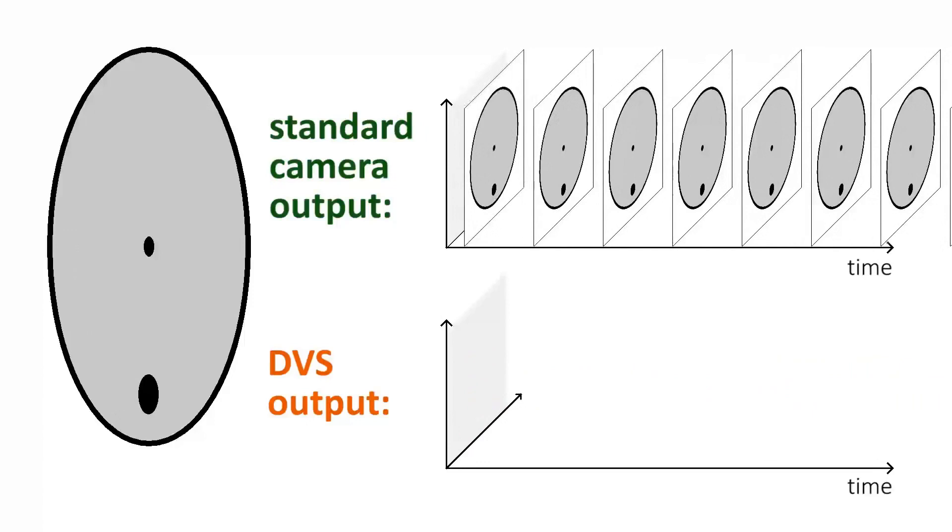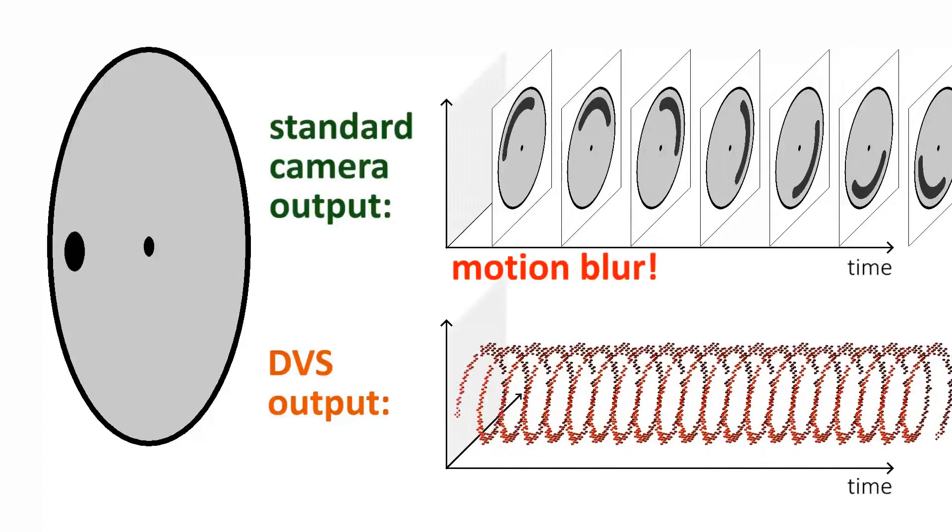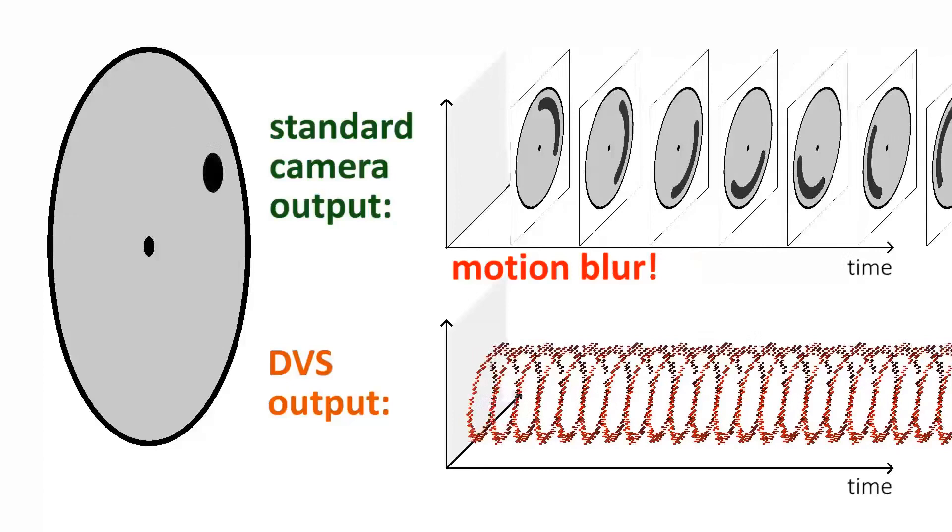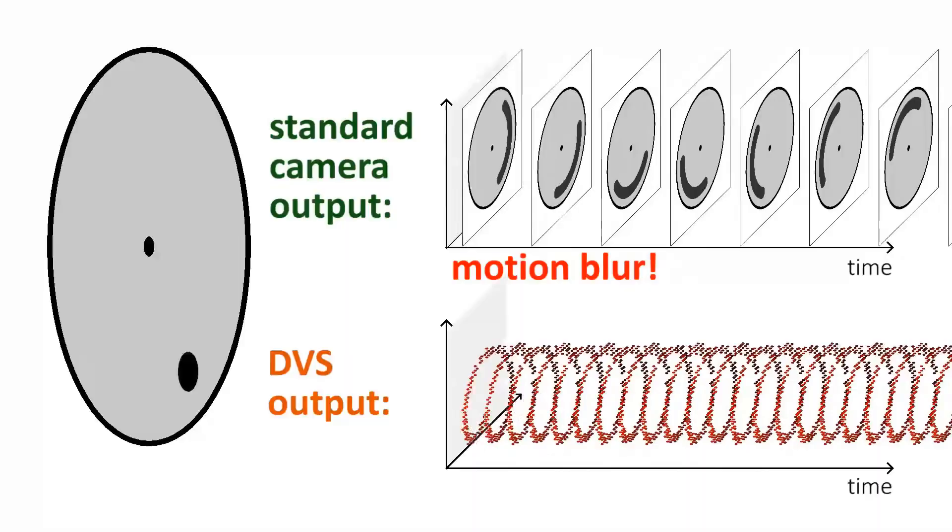Increasing the rotating speed of the disk, the images of the standard camera suffer from motion blur, where the spiral of the event camera is still clearly visible. This is due to the very high temporal resolution of the event camera, which is in the order of microseconds.